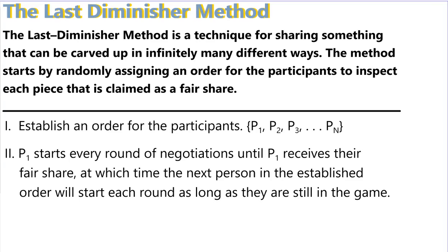This video is a lecture for the last diminisher method. This is the next of the negotiation techniques used in the fair share chapter. The last diminisher method is a technique for sharing something that can be carved up in infinitely many different ways. Often the subject being carved is a parcel of land, which can be carved up in very irregular shapes to make each of the negotiators happy with the end result. The method starts by randomly assigning an order for the participants to inspect the pieces being claimed as fair shares.